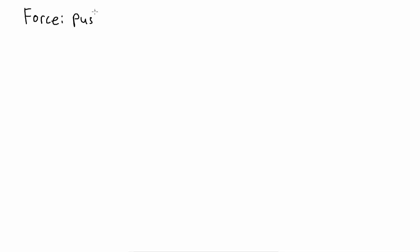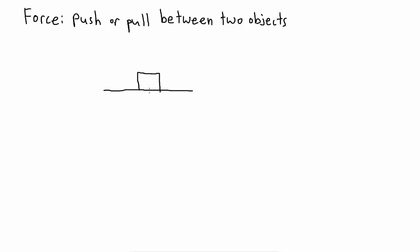Newton's laws are three laws that describe the behavior of forces. A force is a push or pull between two objects. Whenever two objects are touching each other, they are exerting forces on each other. But two objects don't have to actually touch in order to exert forces. For example, gravity is exerted by the Earth on every object near the Earth, even though they might not be touching the Earth directly.